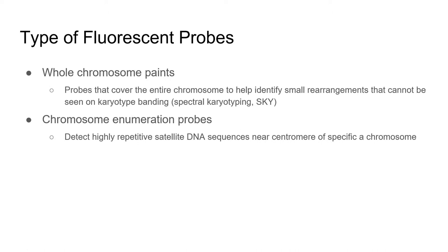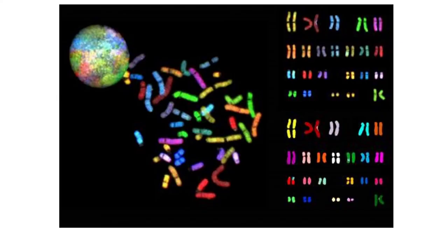There are several types of fluorescent probes. Whole chromosome paints tag the entire chromosome one color. There are enumeration probes that target repetitive DNA sequences near centromeres to help count individual chromosomes. This is an example of whole chromosome painting, known as spectral karyotyping, or SKY.